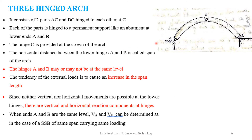A three-hinged arch consists of two parts, AC and BC, hinged to each other at C. A and B are the external hinges and C is the internal hinge, provided at the crown of the arch. The horizontal distance between the lower hinges A and B is called the span of the arch. The hinges A and B may or may not be at the same level. Since neither vertical nor horizontal movements are possible at the lower hinges, vertical and horizontal reaction components develop at A and B.